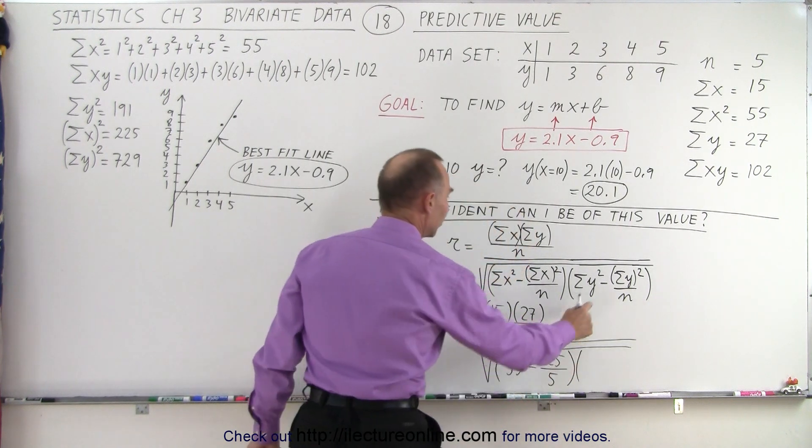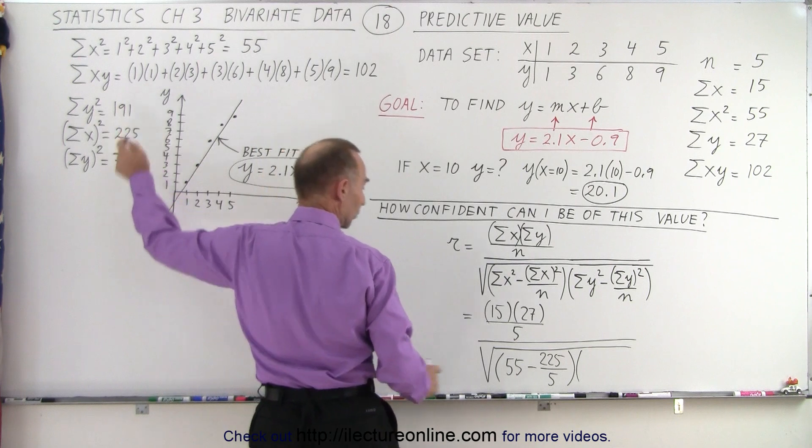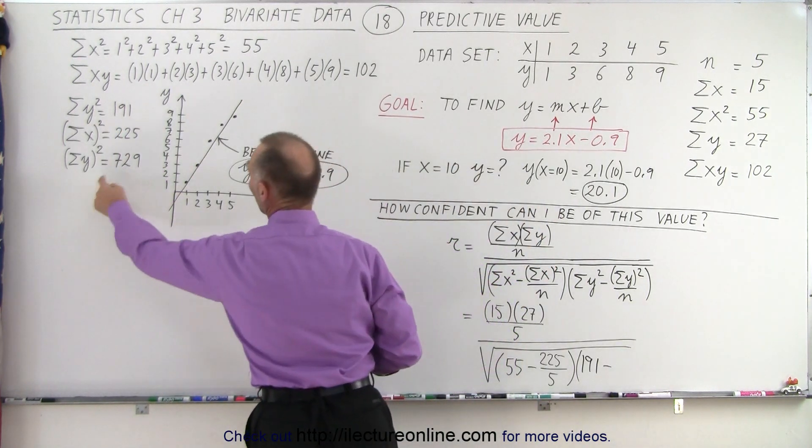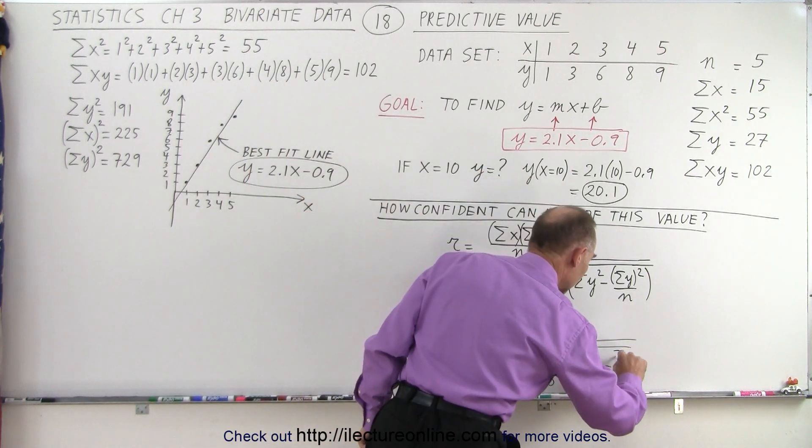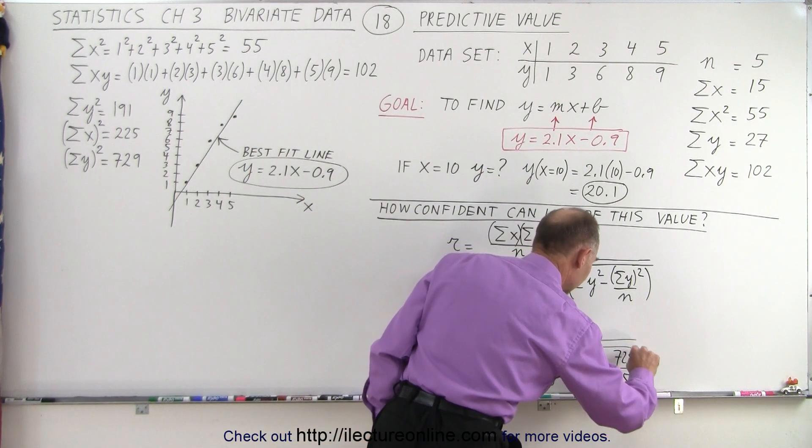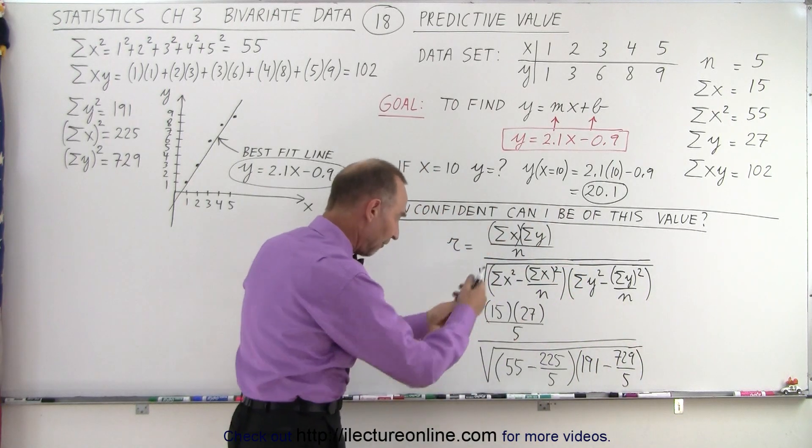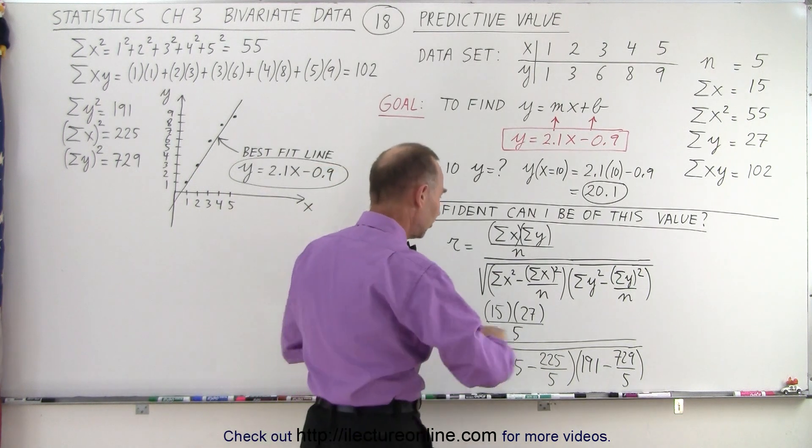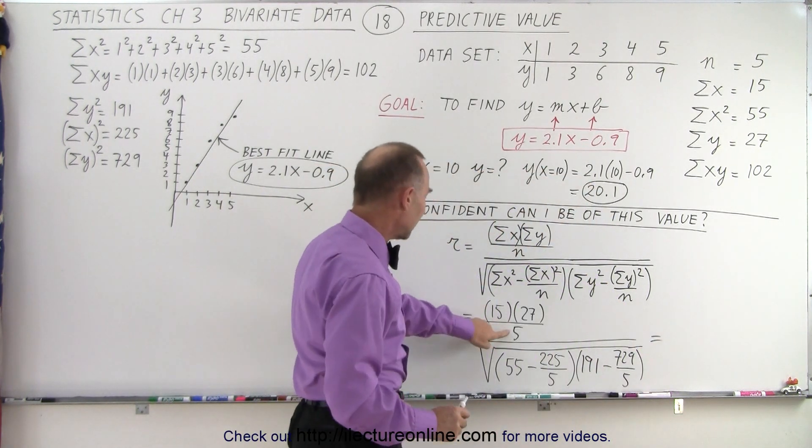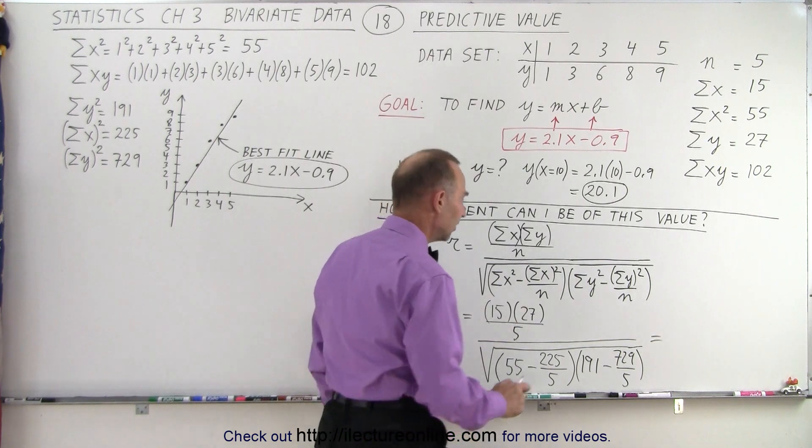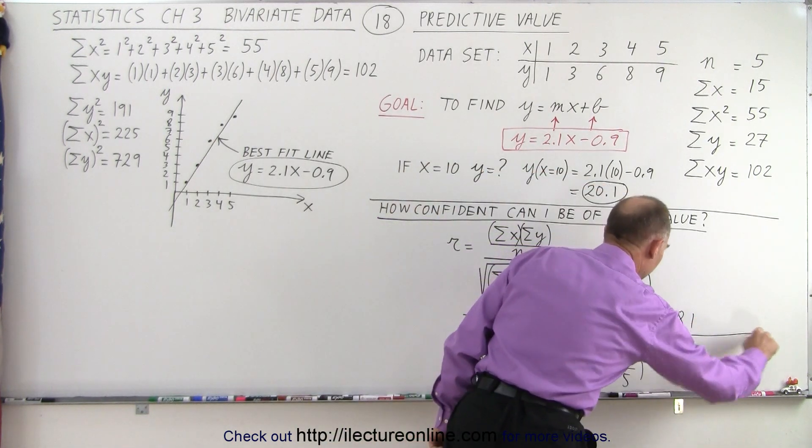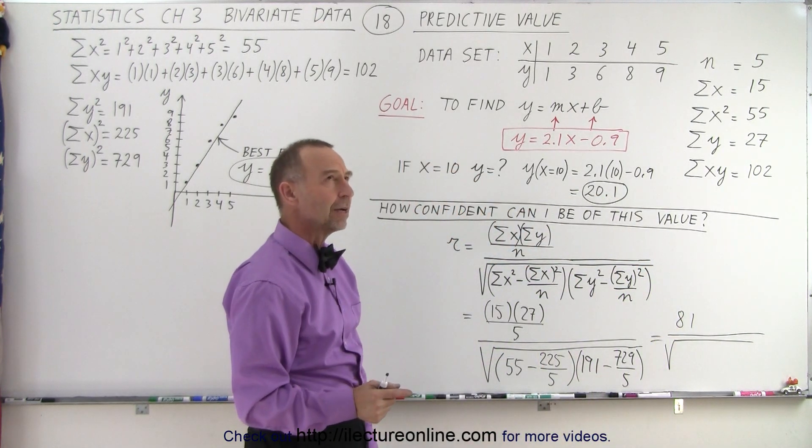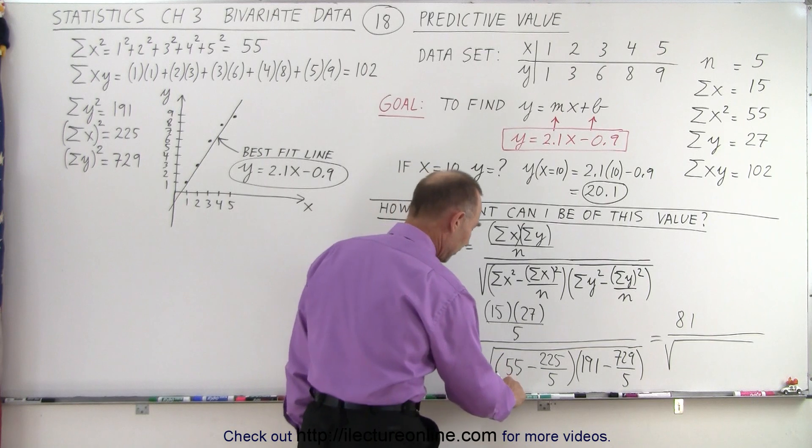And then we multiply it times the sum of all the y's squared, which I need to calculate, which is 191, minus the sum of all the y quantity squared, which is 729, divided by 5, like this. And then we take the square root after we multiply those two quantities in parentheses in the denominator. So let's simplify this a little bit. Okay, 15 divided by 5 is 3 times 27 is 81 in the numerator. So we have 81 divided by the square root of 225 divided by 5, that's 45, subtract from 55 is 10.